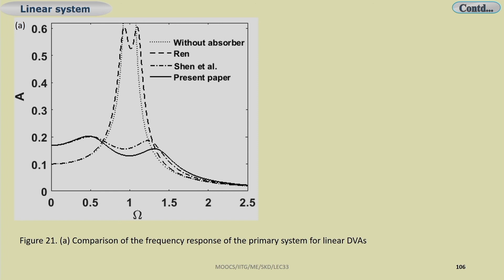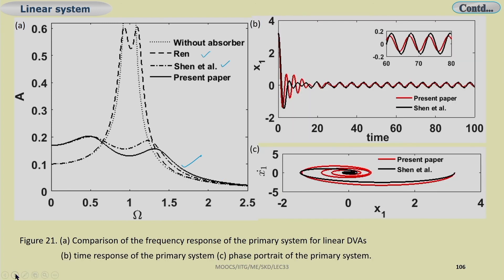By comparing with the present case versus other researchers, the response amplitude is reduced significantly. The time response also shows that the present case has a shorter settling time — the system quickly settles to its steady state of zero oscillation.